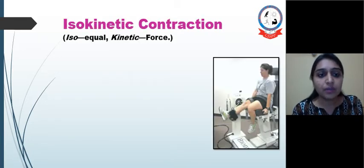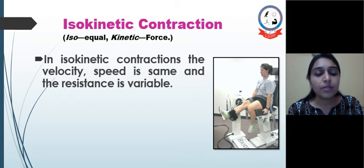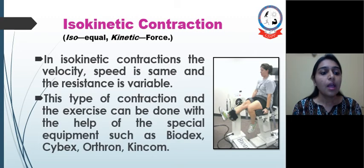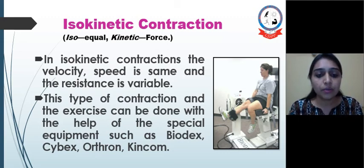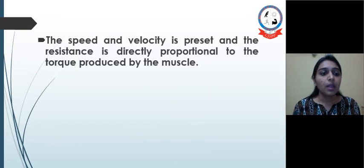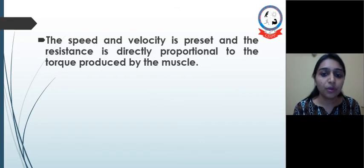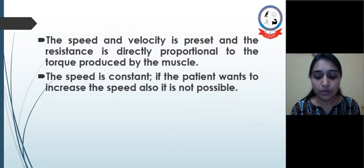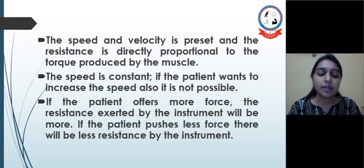The last type of muscle work is isokinetic contraction. Iso means equal and kinetic means force. In isokinetic contraction the velocity and speed remain the same, and the resistance is variable. According to the resistance, there will be an increase or decrease in tone. These exercises are performed with equipment like Biodex, Cybex, Orthon, Kincom, etc. In the figure, a person is doing knee extension in a Biodex machine. The speed and velocity are preset, and the resistance is directly proportional to the torque produced by the muscle — whatever torque the patient generates, that much resistance is offered by the machine. The speed is constant; if the patient wants to increase speed it is not possible, but if the patient offers more force the resistance will also be more, and if less force is applied then there will be less resistance.